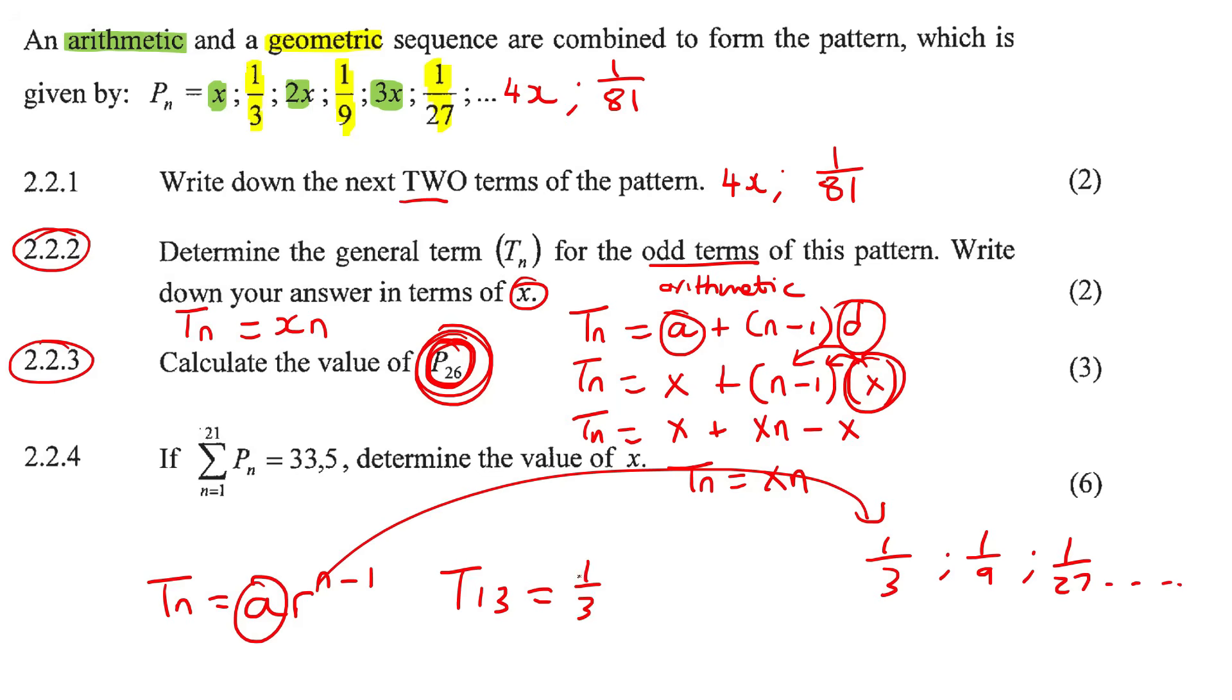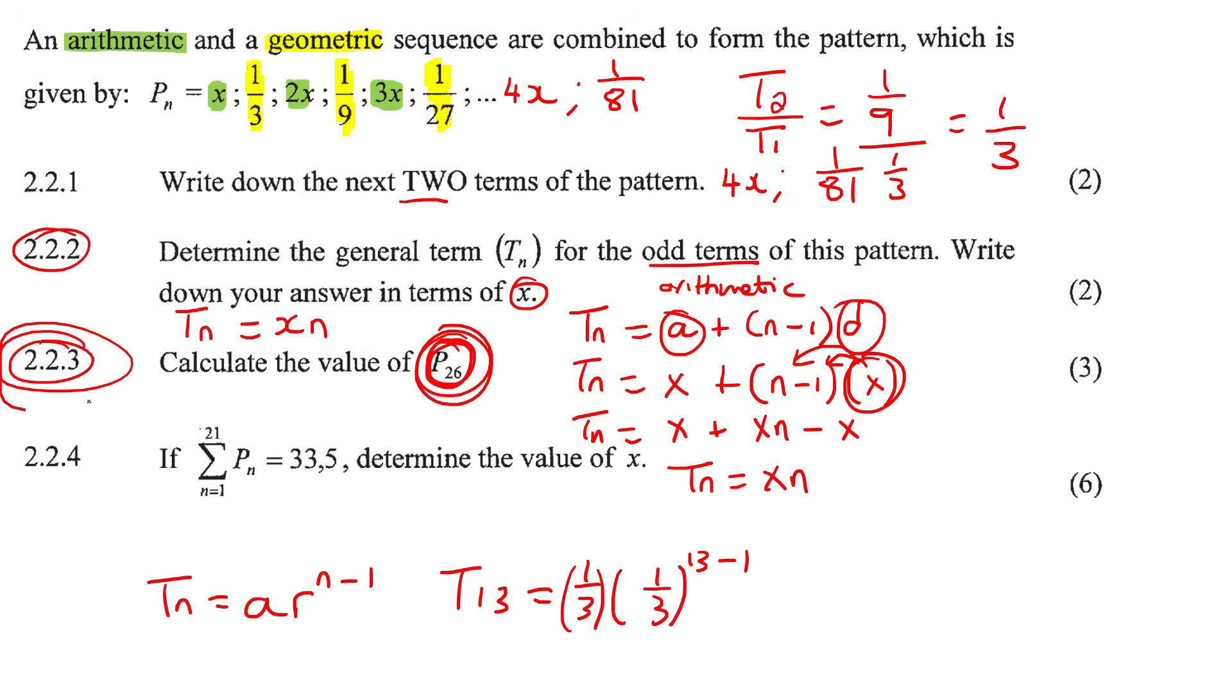So we're going to use the geometric formula. But now be careful. We're not going to go find term 26 now. Because what you must imagine is that we take the geometric sequence out of this thing. So now we just have 1 over 3, 1 over 9, 1 over 27. So if it's term number 26 inside this pattern, what term number would it be if we break it out into its own one? Wouldn't it be term 13? Because we're removing half the things. So term 26 inside here would actually just be term 13 in its own sequence.